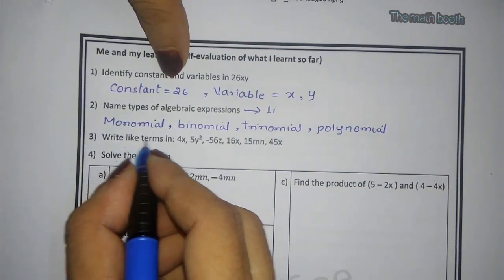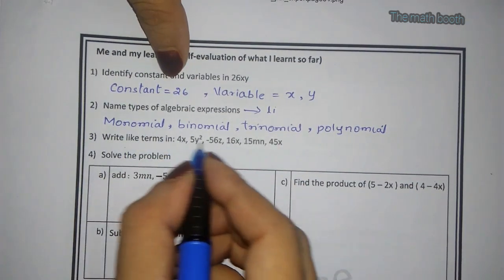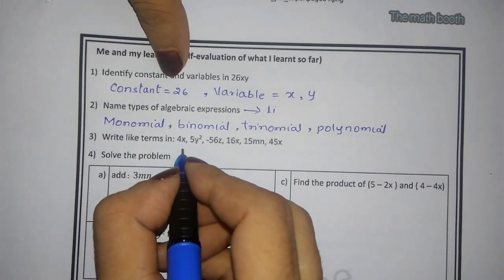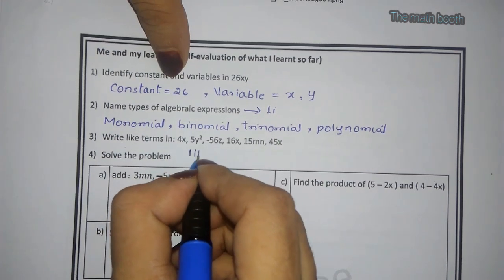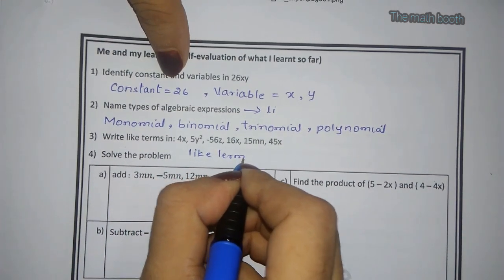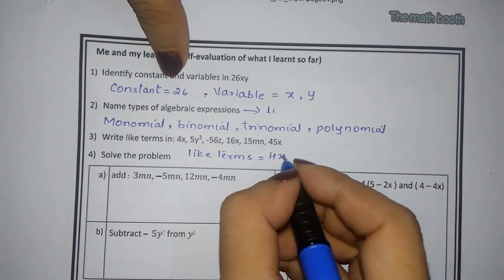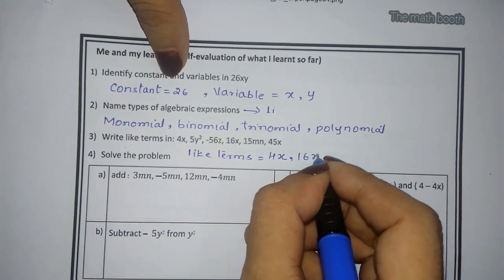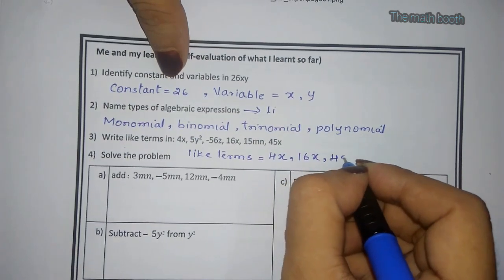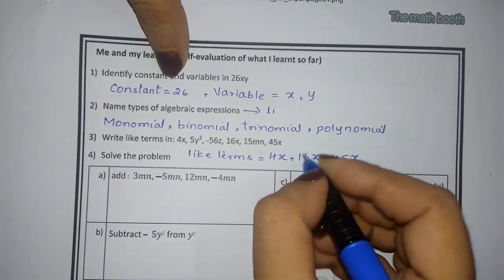Write the like terms in the following problem. So like terms, let me write, like terms is equals to 4x, 16x, 45x. These are the like terms, same variable. 4x, 16x, and 45x are the like term.